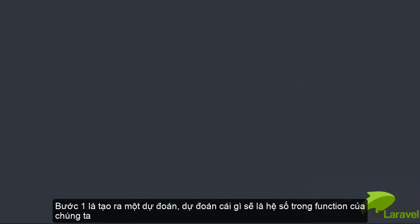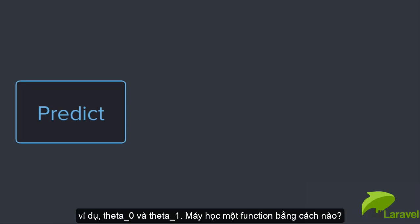Step one is to make a prediction. Predict what exactly? Well, the coefficients in our function, for example, the theta 0 and theta 1. Our machine is learning a function, so it has to start by predicting the coefficients in that function. Now, the very first time this happens, the very first prediction is pretty much like a completely random guess. So let's move on to step two.